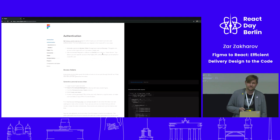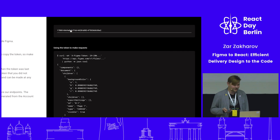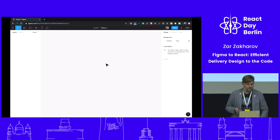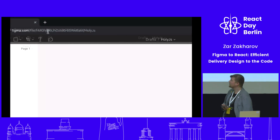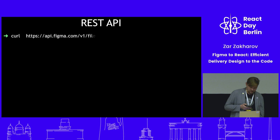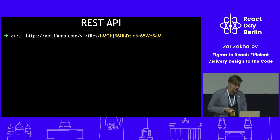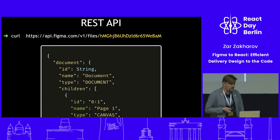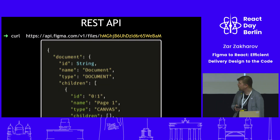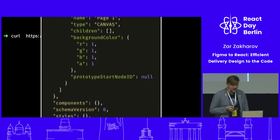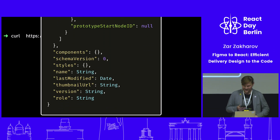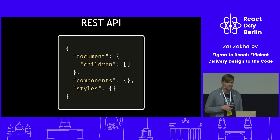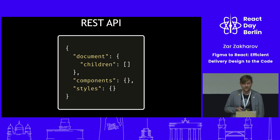This API is well documented — thank you Figma for that. Take this empty Figma file, take the file key from the URL, then make an API request with this file key and you get a JSON response. It has many, many fields. But don't worry — we are only interested in the document and children fields.